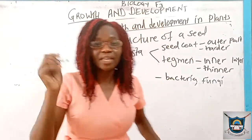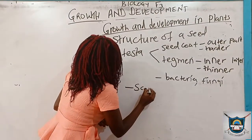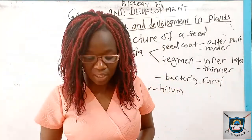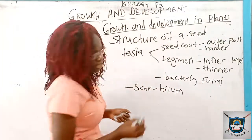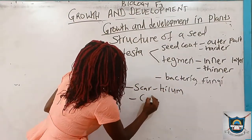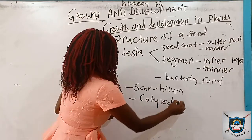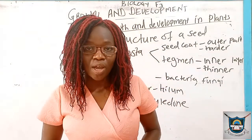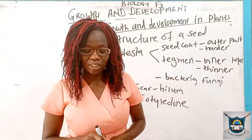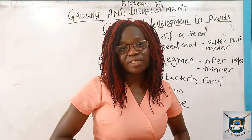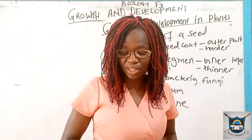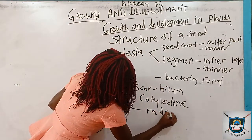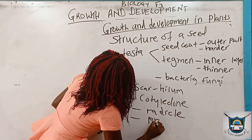The seed also has a scar which is called the hilum. The hilum is where the seed was attached to the seed stalk. The seed also contains the cotyledon. The cotyledon in a seed may be one or two. A seed with only one cotyledon is called a monocot, and a seed with two cotyledons is called a dicot.